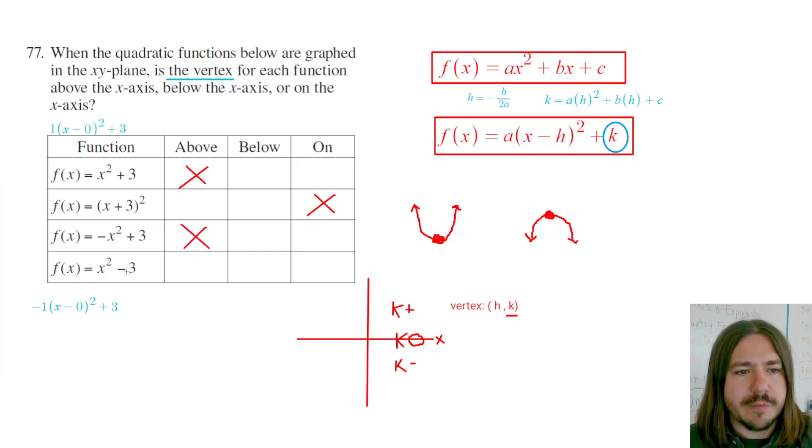And then finally, this last one, we have minus 3. It would be the same thing as this one up here, except the k would be negative. So this one's going to be below the x-axis. So that's it for number 77. Really, it's all about this k value, whether or not this point is going to be above or below the x-axis. So thanks for watching, and y'all have a great day.